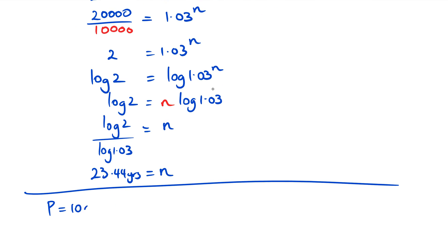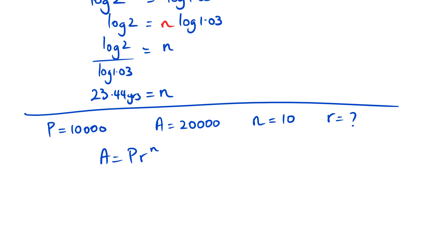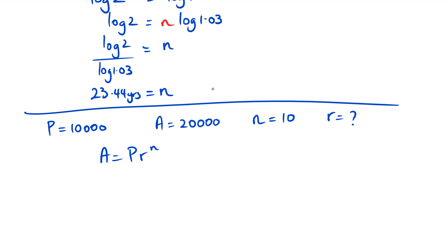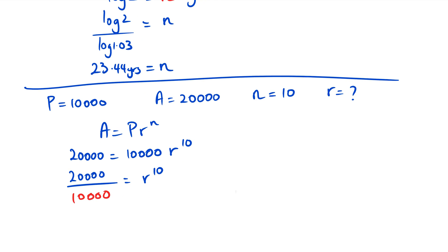To find R: we still start with P of $10,000, and I want my final amount to be $20,000, but I want this in 10 years. What should the term deposit rate be? So: 20,000 equals 10,000 multiplied by R to the power of 10. I want to double my money in 10 years. Rearranging: 20,000 divided by 10,000 equals R to the power of 10, so 2 equals R to the power of 10.